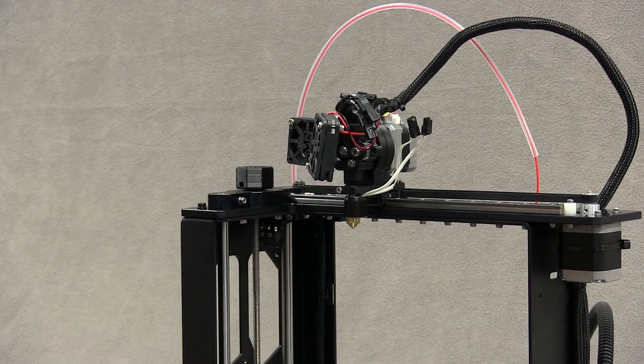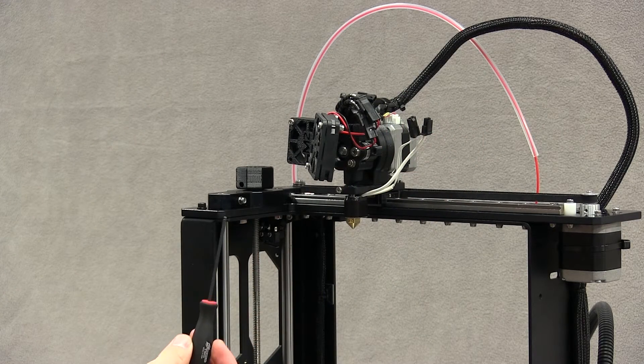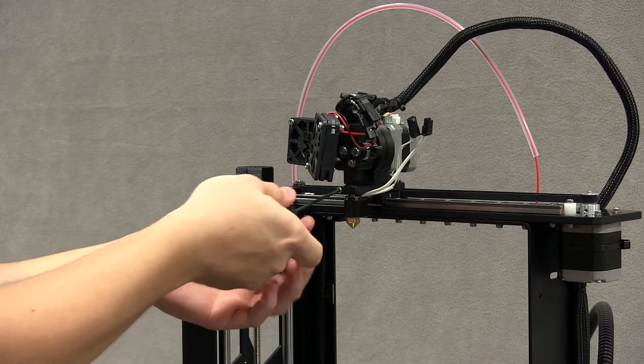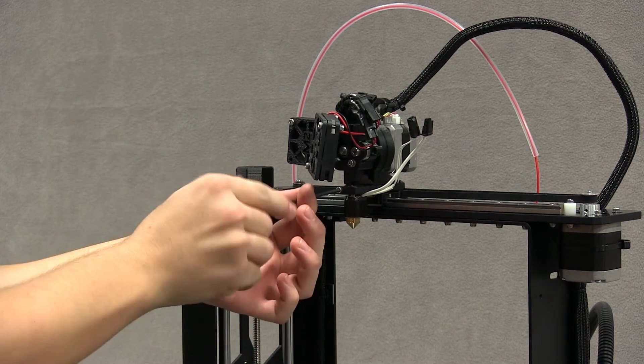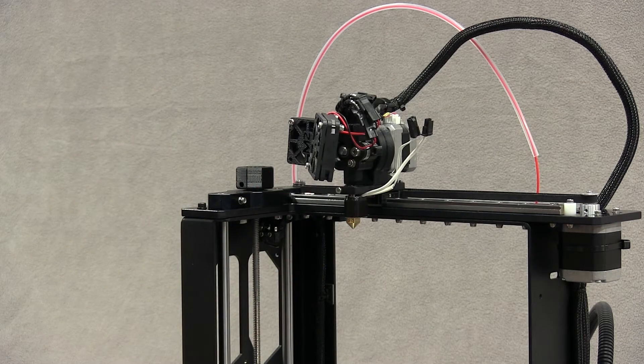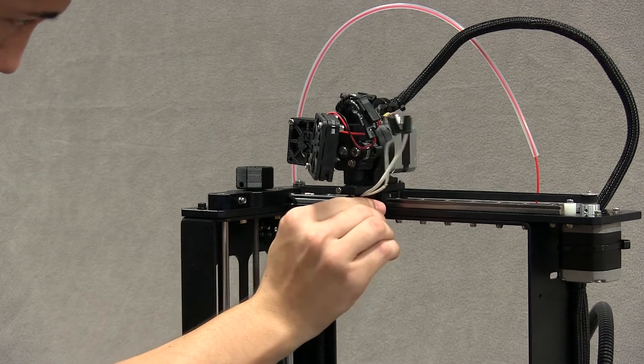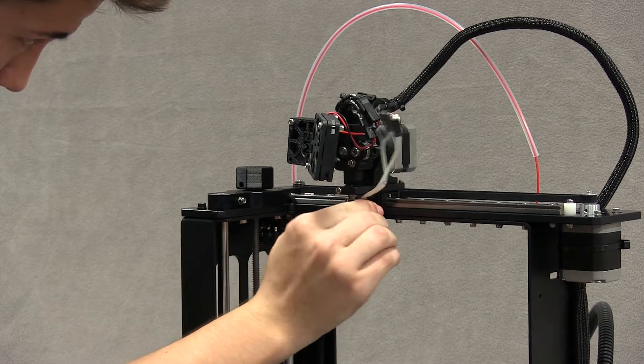Get the 2.5 millimeter driver from your original tool kit and loosen the clamp screw at the front of the mounting plate. Use gentle downward force to pull the hotend out, twisting if necessary.